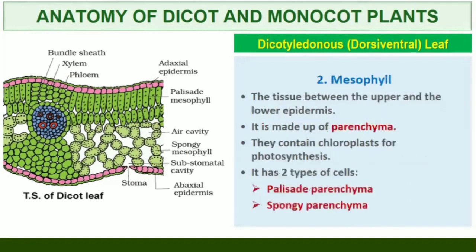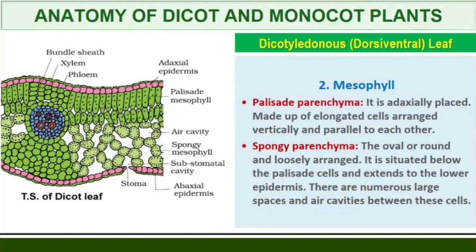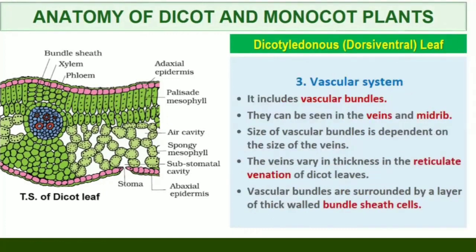The tissue between the upper and the lower epidermis is called the mesophyll. Mesophyll, which possesses chloroplasts and carries out photosynthesis, is made up of parenchyma. It has two types of cells: the palisade parenchyma and the spongy parenchyma. The adaxially placed palisade parenchyma is made up of elongated cells arranged vertically and parallel to each other. The oval or round and loosely arranged spongy parenchyma is situated below the palisade cells and extends to the lower epidermis, with numerous large spaces and air cavities between these cells. The vascular system includes vascular bundles seen in the veins and midrib. The size of the vascular bundles is dependent on the size of the veins, which vary in thickness in the reticulate venation of dicot leaves.